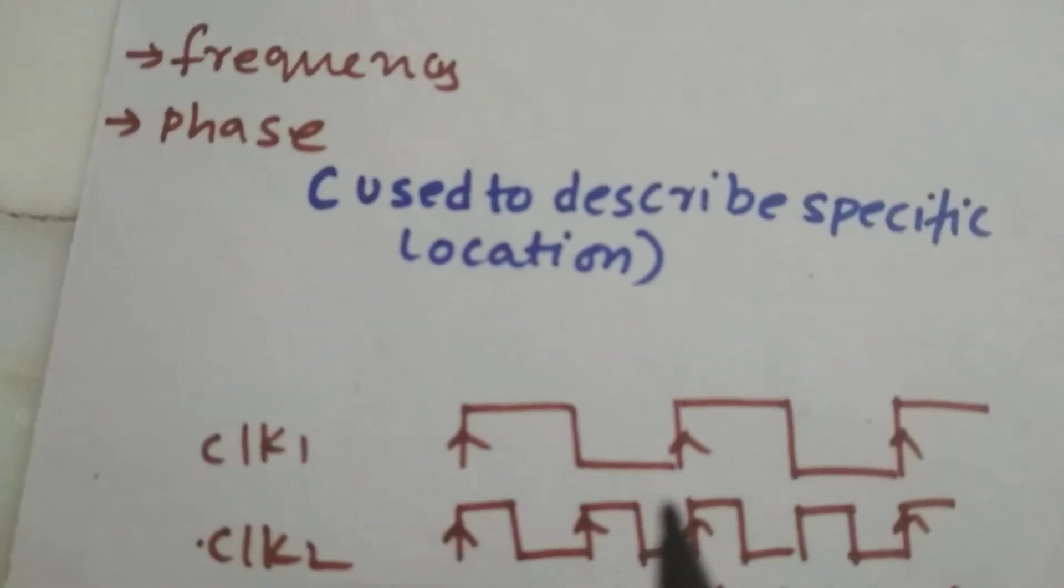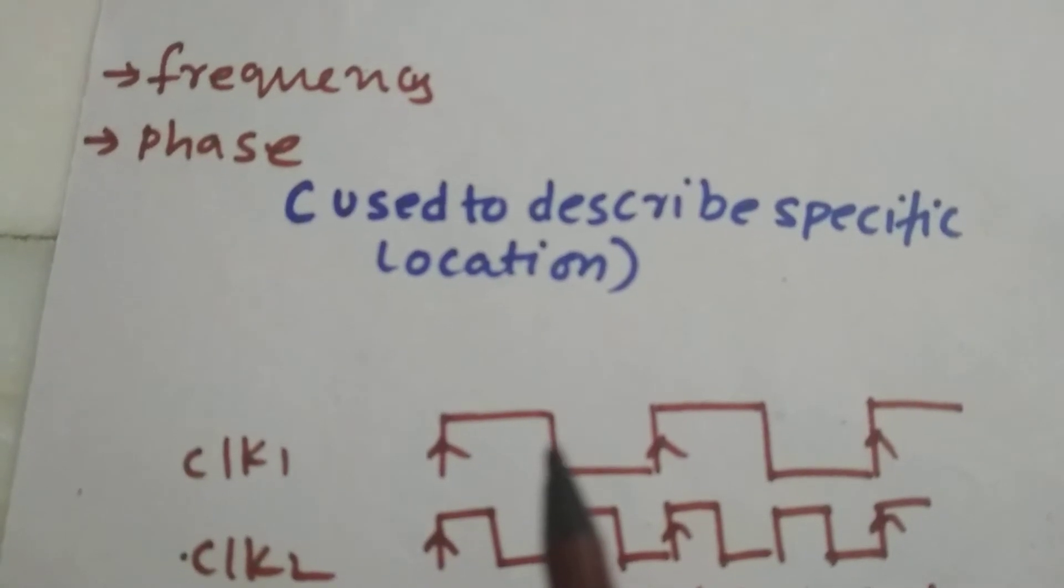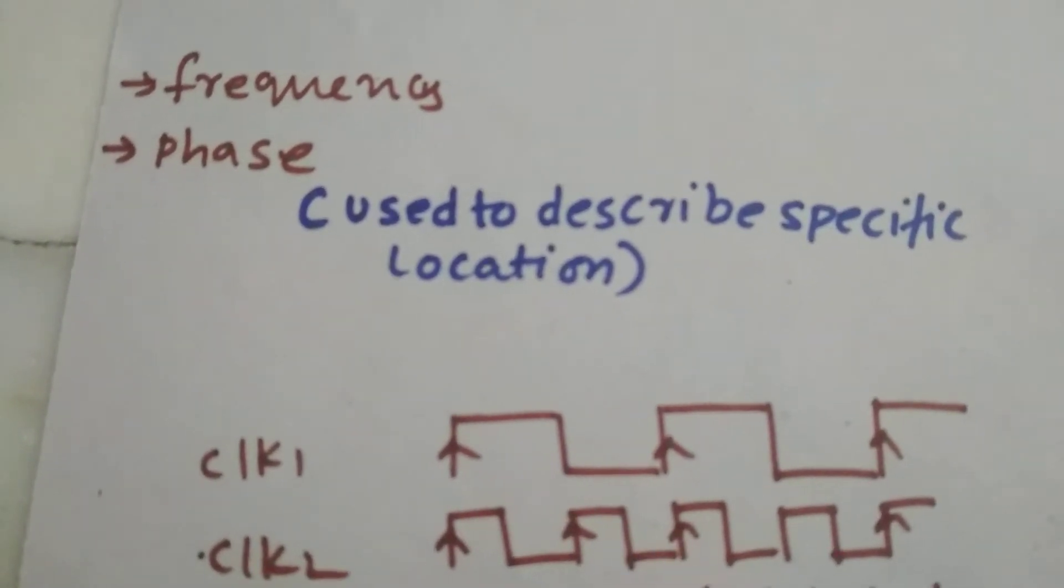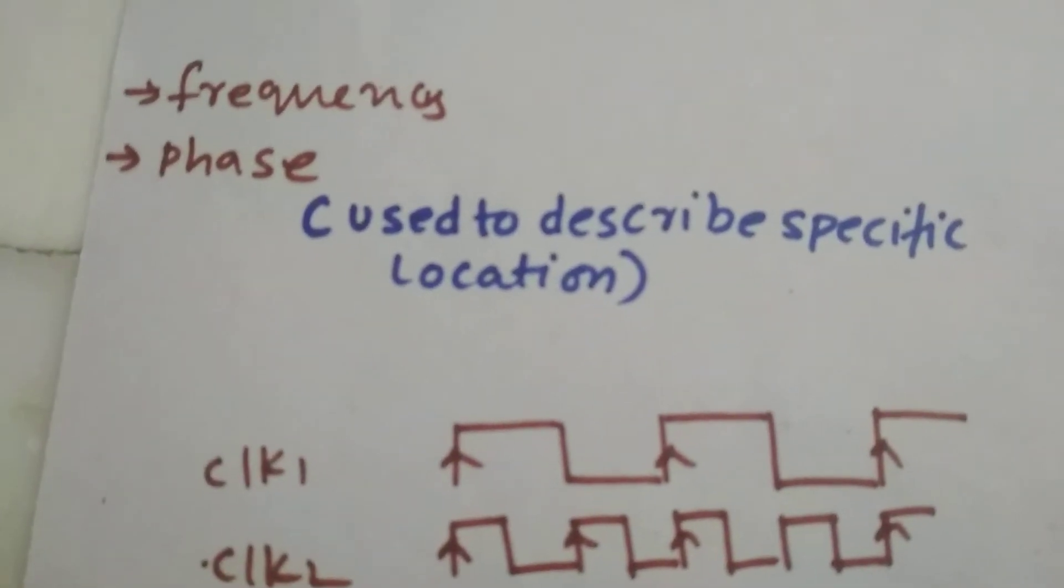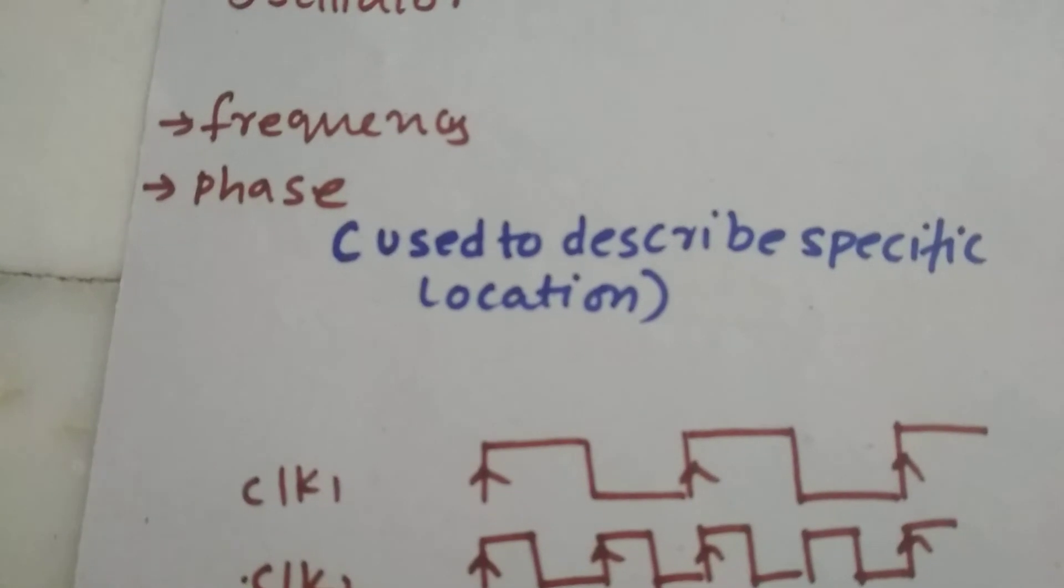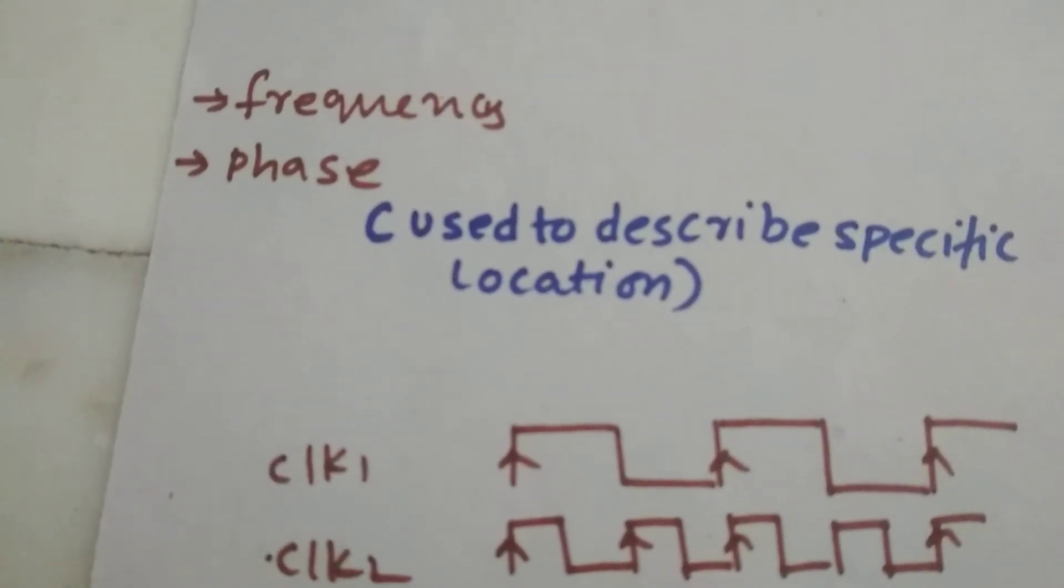But their time period or frequency is varying. Even if the frequency is varying, that's not a problem. But if they are not in phase, then that's a problem. Frequency varying is not a problem - understand this. When they are out of phase, then they are said to be asynchronous, and the clock domain which they belong to.